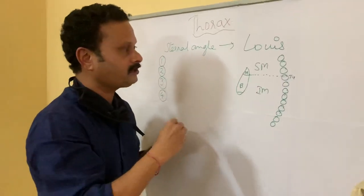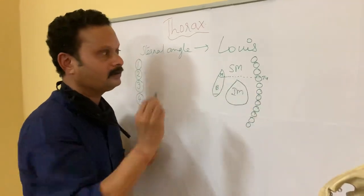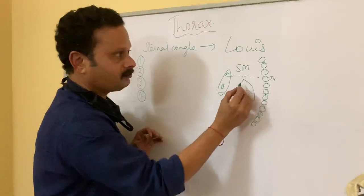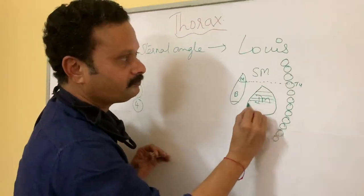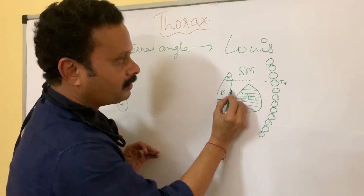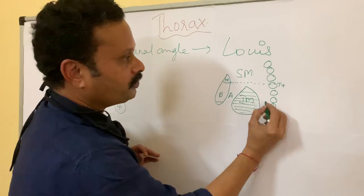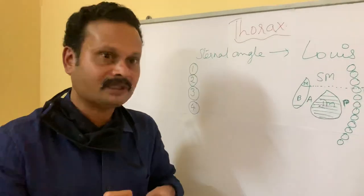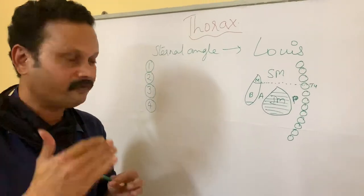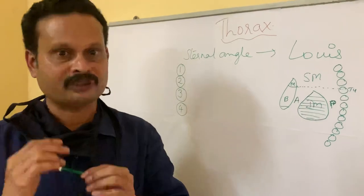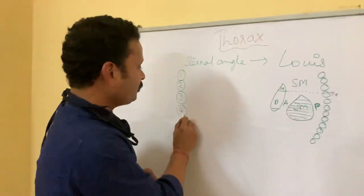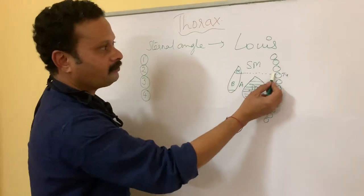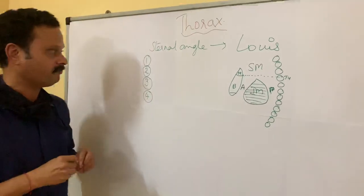Within the inferior mediastinum we find the heart. The portion where the heart is located is the middle mediastinum. The portion in front of the heart is the anterior mediastinum, and the portion behind the heart is the posterior mediastinum. So the mediastinum overall is divided into superior and inferior, and the inferior one is again divided into anterior, middle, and posterior mediastinum.